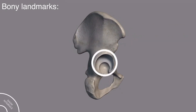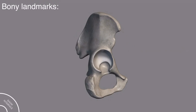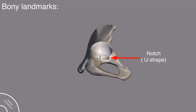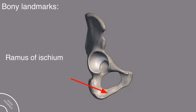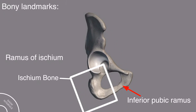This whole structure through which it articulates with the femur bone is called the acetabulum. The margin of the acetabulum is called the acetabular margin. Inside the acetabulum, this surface is called the lunate surface, and deep inside the acetabulum, this is called the acetabular fossa. This notch is called the acetabular notch. This is called the ramus of the ischium because it is in the ischium part, and this is called the inferior pubic ramus. The inferior pubic ramus and the ramus of ischium are continuous with each other.